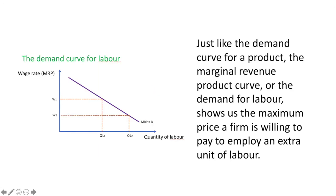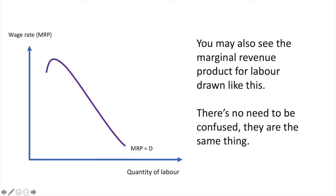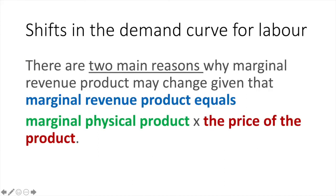And just like the demand curve for a product, the MRP curve — or the demand for labour — shows us the maximum price a firm is willing to pay for each additional unit of labour. You may also see the marginal revenue product for labour curve drawn differently. There's no need to be confused; they are the same thing.